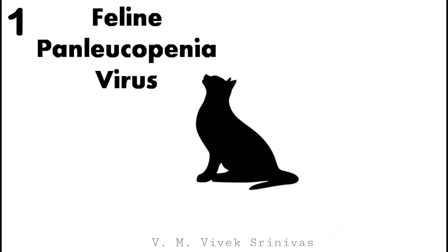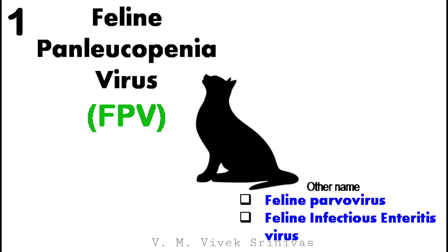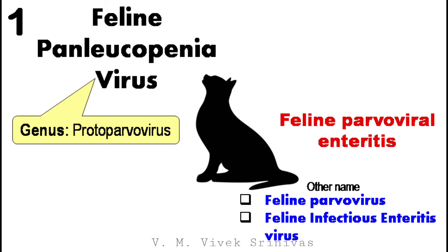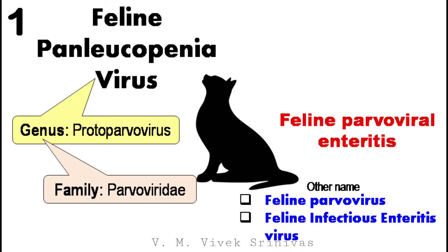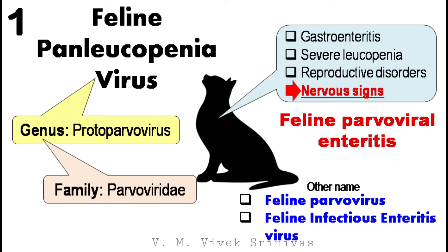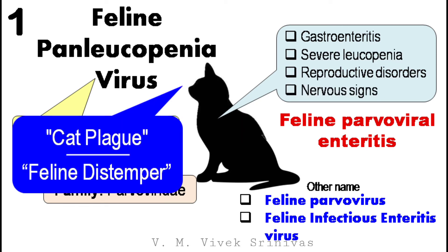Feline Panleukopenia Virus, also abbreviated as FPV. The other names for this virus are Feline Parvovirus and Feline Infectious Enteritis Virus. This virus causes parvoviral enteritis in felines. This infection is caused by the species FPV, of the genus Protoparvovirus, family Parvoviridae. This virus causes a highly contagious disease characterized by gastroenteritis, severe leukopenia, reproductive disorders, and nervous signs. This infection is sometimes confusingly referred to as cat plague and feline distemper.